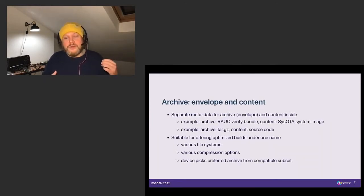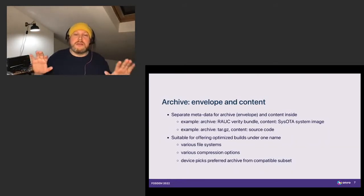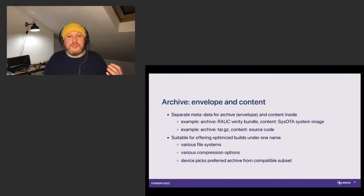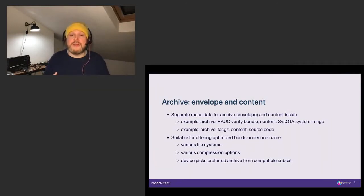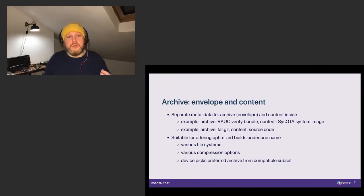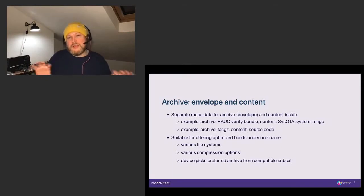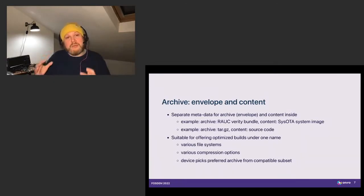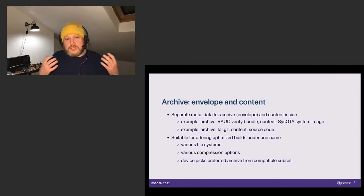An important feature of the archive is that it describes the envelope and the content separately. For example, you can have an archive which says it is a RAUC bundle — RAUC is an embedded updating mechanism that SysOTA is based on — and within this RAUC bundle there is a SysOTA system image you can use to update a device. Another example could be a tar.gz tarball where the contents is just source code. The fact that these are separate allows you to describe the content more precisely, for instance to allow the same build of an OS image to be compressed with different compression options for different devices based on their hardware constraints like memory or CPU.